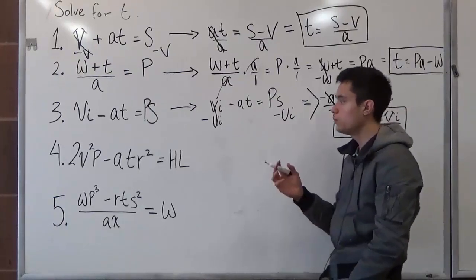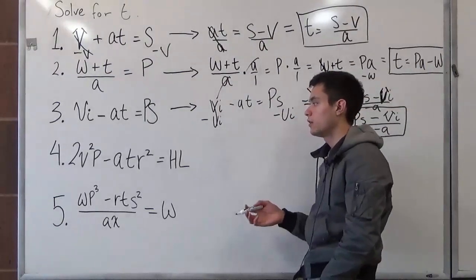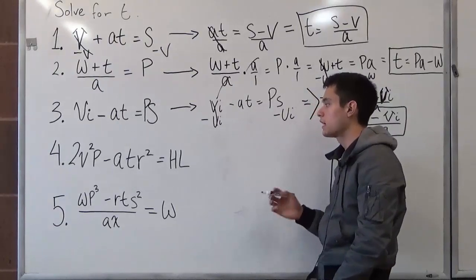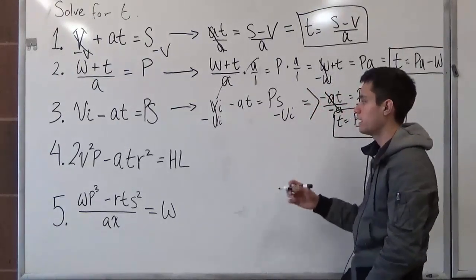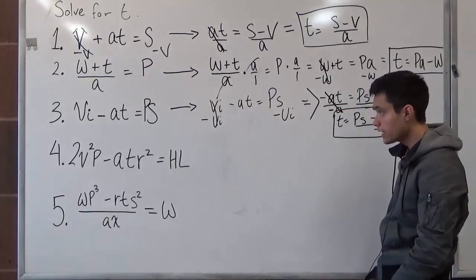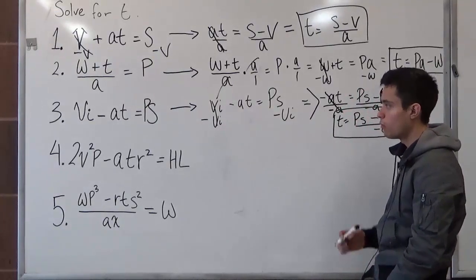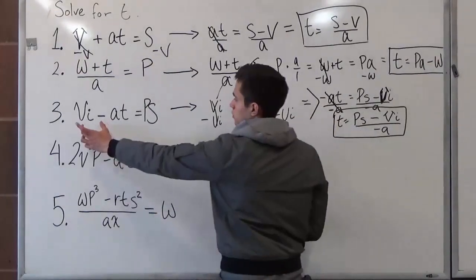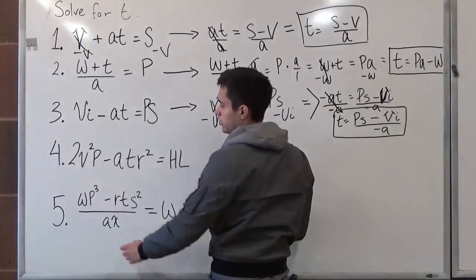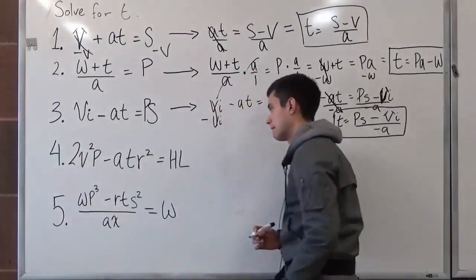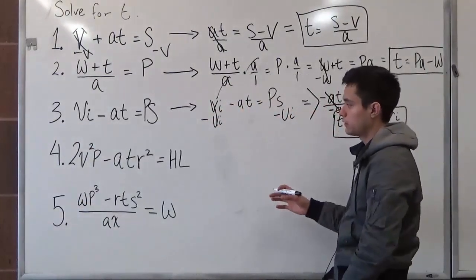So what we have here is 2v squared times p minus a times t times r squared equals hl. It's the same concept. What we did on number 3 for treating this as a whole, we're going to do here for number 4. So don't let the exponents scare you.